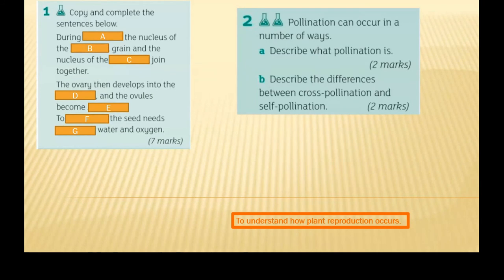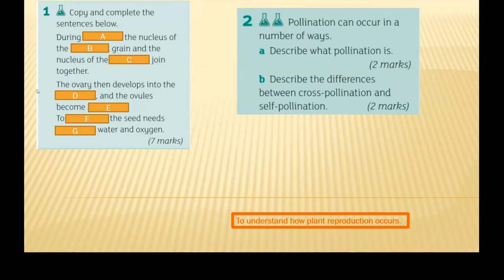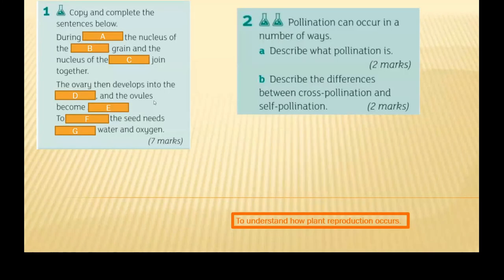A, during fertilization. The nucleus of — B would be the pollen grain. And the nucleus of the ovule will join. The ovary then develops into the fruit and the ovules become seeds. F — germinate. The seed needs warmth, water, and oxygen. In the summary: during fertilization, the nucleus of the pollen grain and the nucleus of the ovule fuse — I prefer 'fuse' over 'join', it's more scientifically accurate.